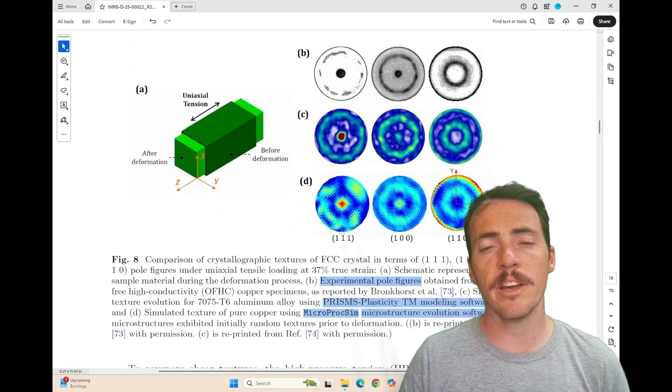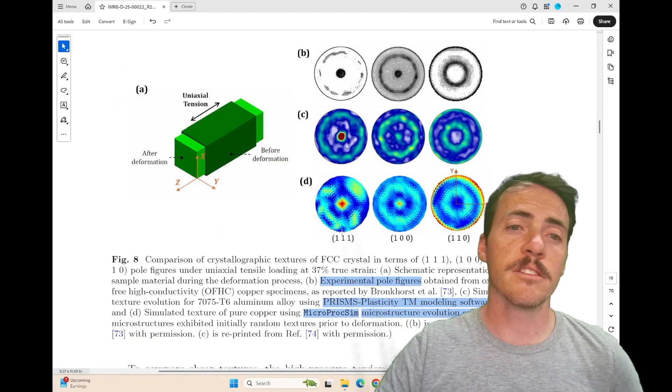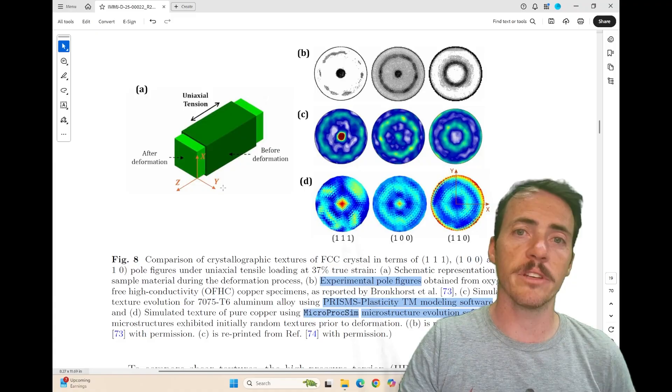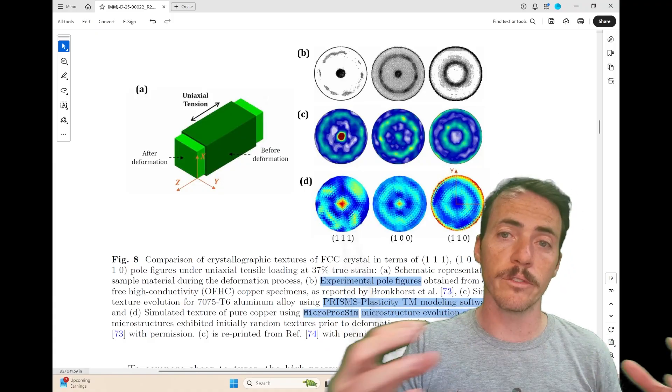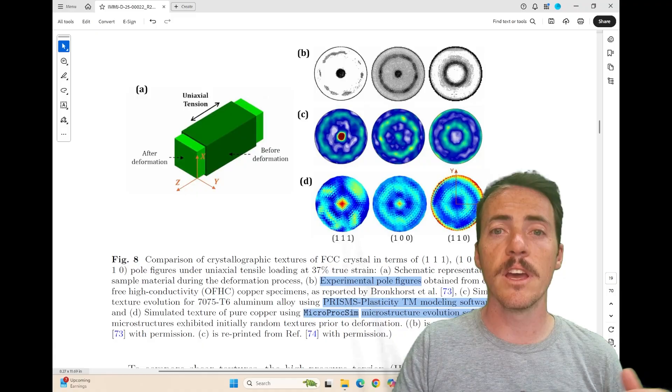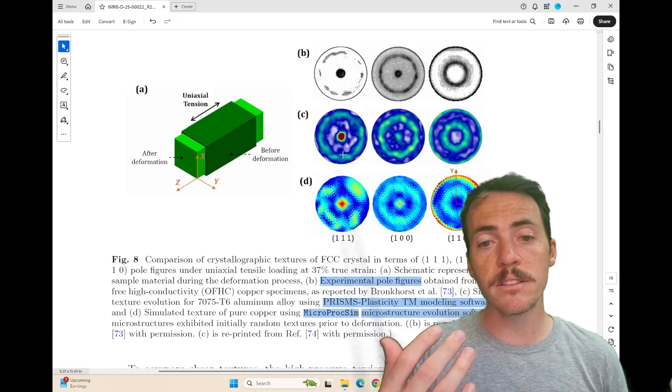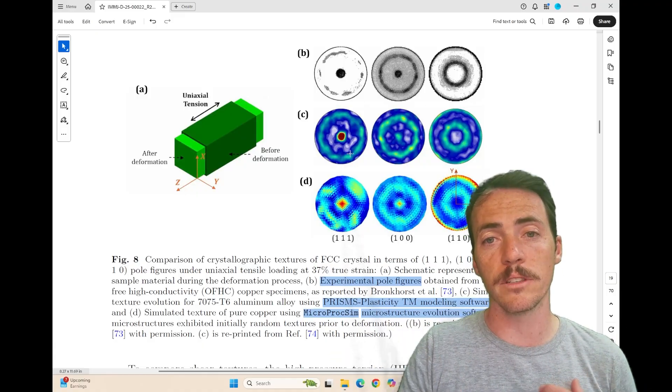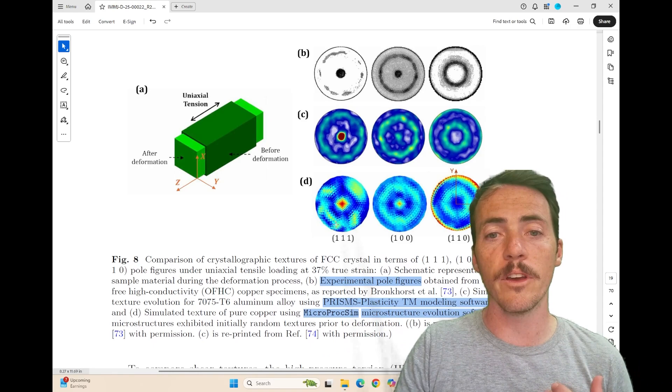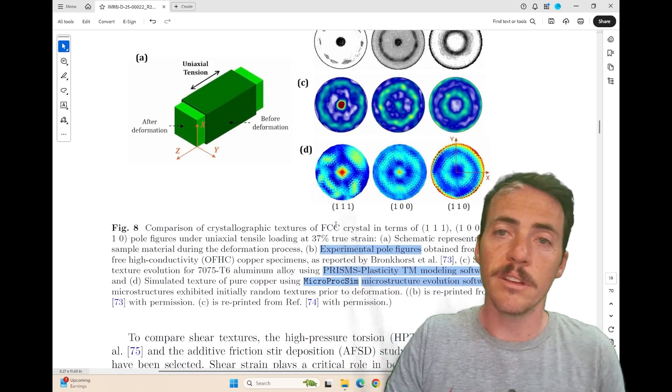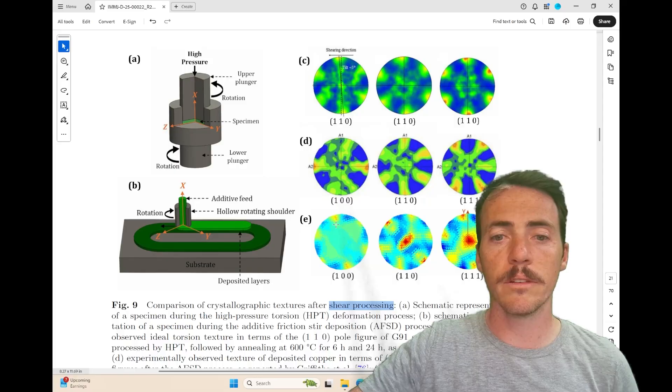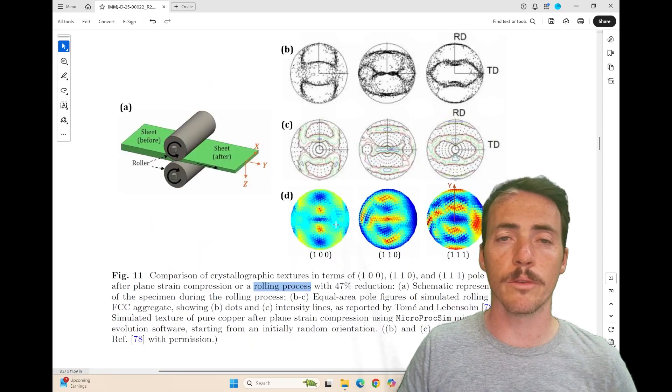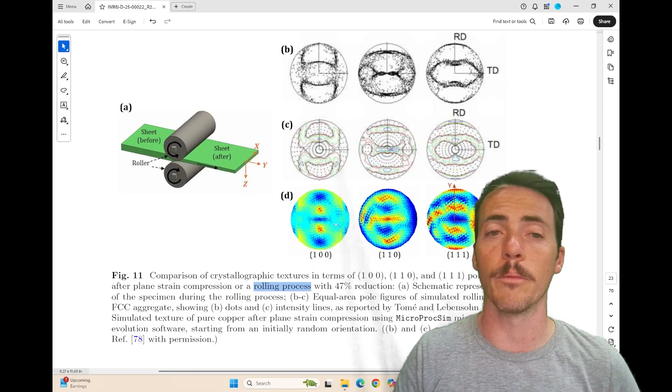What you probably care the most about is how well does this actually agree with experiment. So here's an example. Here's a tension experiment. And in the top, you're seeing what the experimental pole figures look like, showing you the evolution of texture in the different orientations. And then here's the expensive, this is Prism's plasticity TM modeling software in the middle. And in the bottom is their microproxim microstructure. And you can see that it agrees pretty well. Similarly for shear, you can get good agreement. And for rolling, it can capture the complex microstructures that evolve from rolling as well.